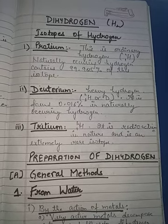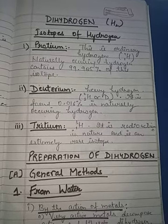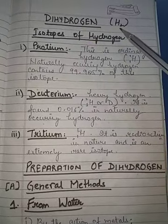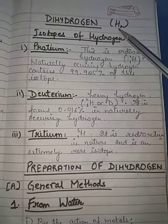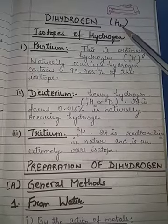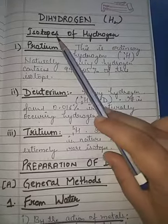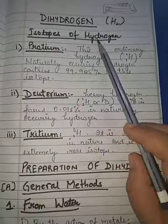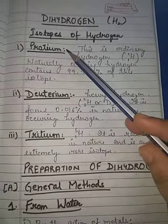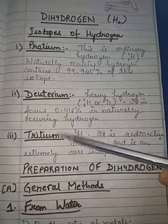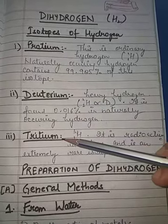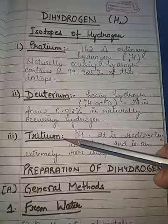Hello students, today we will study about dihydrogen. Dihydrogen is a diatomic molecule having two atoms, H₂, and its atomicity is two. First, we will study about the isotopes of hydrogen. There are three isotopes of hydrogen: protium, deuterium, and tritium. All of them have atomic number one, but their masses are different due to differences in their number of neutrons.